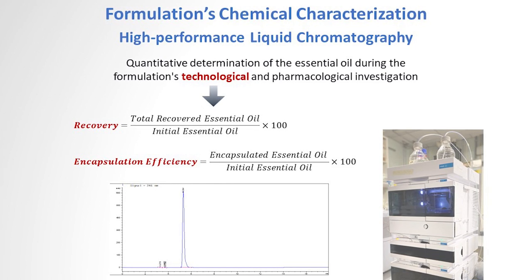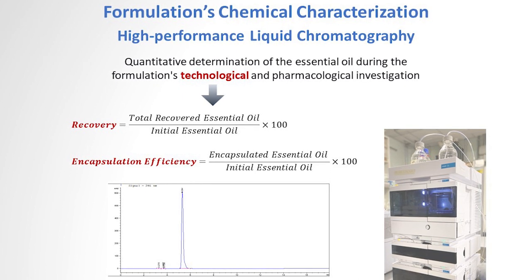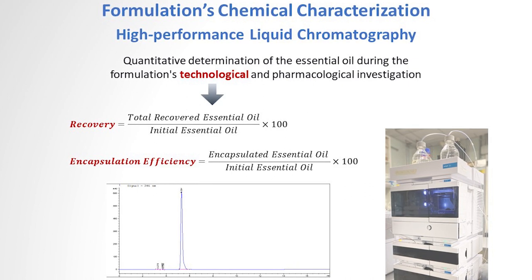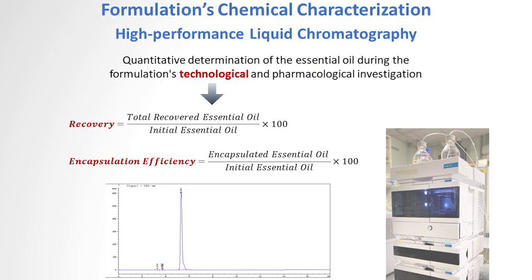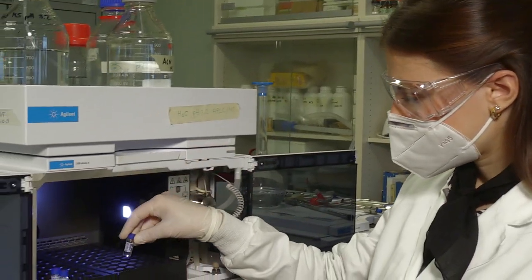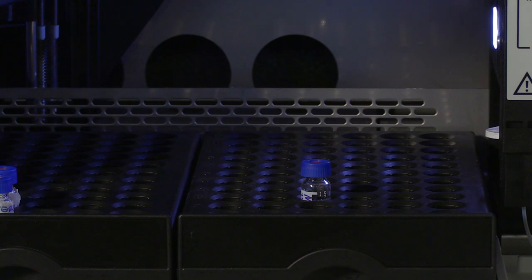The formulation is first purified from the not-entrapped drug when the encapsulation is evaluated. Dialysis and ultracentrifugation are commonly used methods to remove the free drug. Therefore, the encapsulated essential oil is the amount entrapped inside nanovesicles or microemulsion globules.